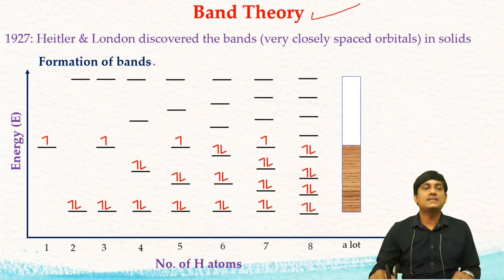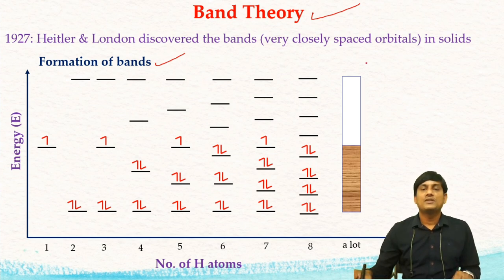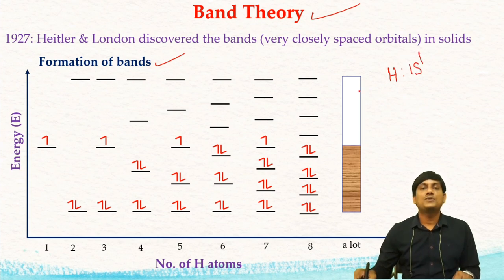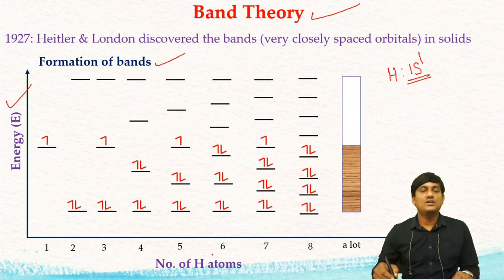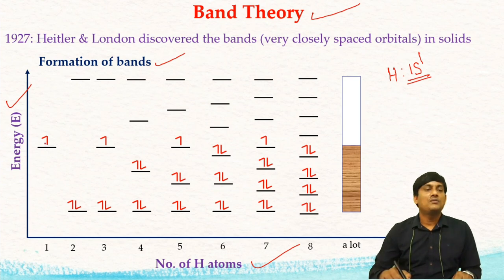The formation of bands can be explained by taking hydrogen. If you take hydrogen, the electronic configuration of hydrogen atom is 1s1. You can find the 1s orbital in hydrogen atom. In this diagram, on the y-axis you have energy, and on the x-axis you have number of hydrogen atoms. If you take one hydrogen atom, you can find only the atomic orbital, that is 1s.